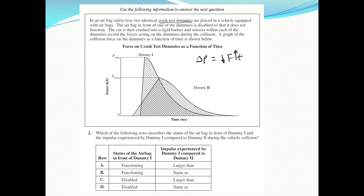You can either hit the airbag — which almost trampoline-like slows you to a stop — or hit the steering wheel, which stops you instantly with a much higher force. So an airbag increases the time it takes you to stop, which decreases the force. This one here is with an airbag, and this one is no airbag — bigger force, no airbag.